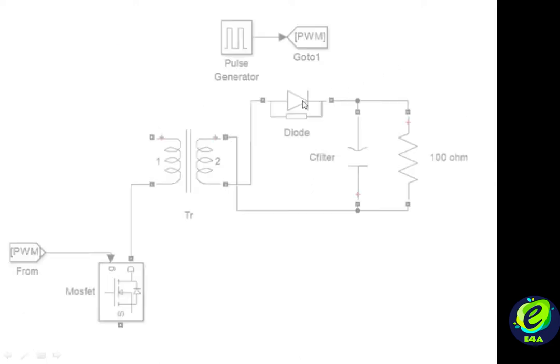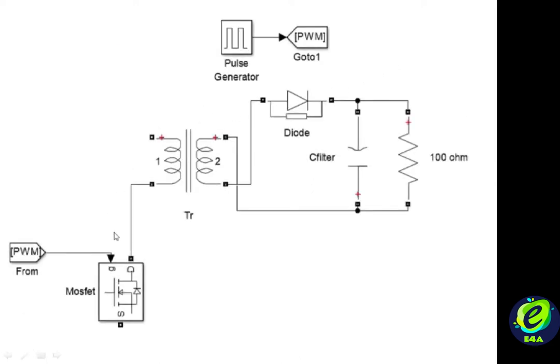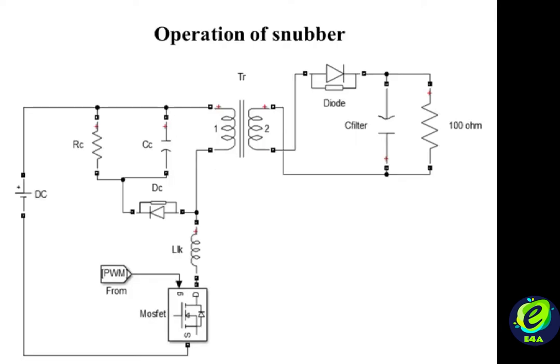These voltages are well below the safety margin of 535V, so we do not need any snubber operation at this point because the voltage on the MOSFET is less than the permissible value. But if we implement an RCD-based snubber, it will dissipate some energy in the resistor and contribute to reduced efficiency, which is undesirable. For this reason, it is better to go for a TVS diode-based snubber circuit if one desires better efficiency.